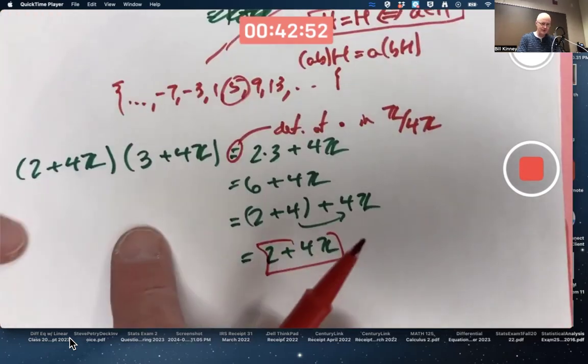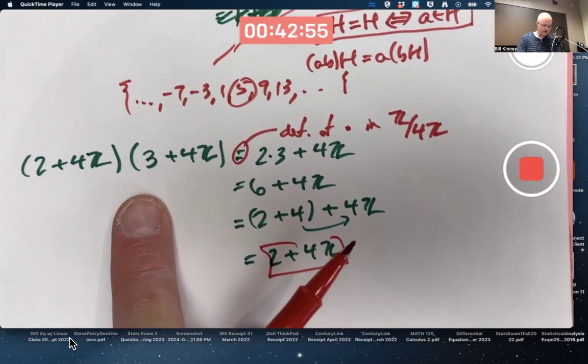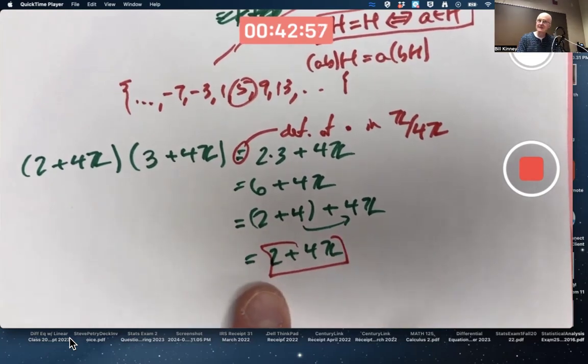And 2 times 3 equals 6, mod 4 is 2. Is that a coincidence? No.